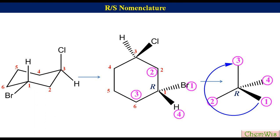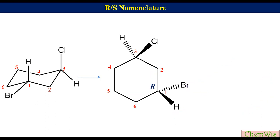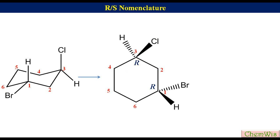For the configuration at C3, label the groups based on their priorities as 1, 2, 3, and 4. The fourth priority is on a hatched wedge. So draw an arrow from 1 to 3 via 2. Since the direction of the arrow is clockwise, the configuration at C3 will be R. That's it for this lecture. Please don't forget to watch the next lecture in which we will be discussing determination of R and S configuration when the molecule is in Fischer projection.